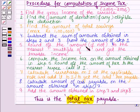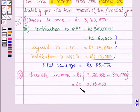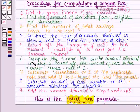The next step is to round off the amount, if not already, to the nearest multiple of 10 and get the taxable income. Since the amount obtained in step 4 was already a multiple of 10, we move on to the next step, which says: compute the income tax on the amount obtained in step 5, round off the amount of tax to the nearest rupee, and call it I.